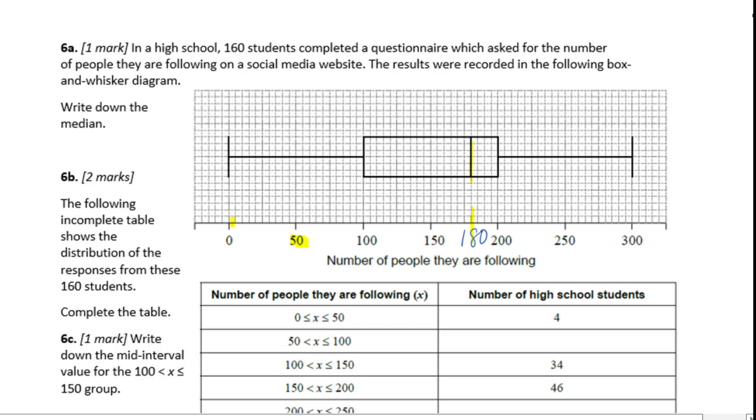So we know from 0 to 100, this is 25% of the data. This part is 25%, 25%, and 25%. From 0 to 100, we have 25% times 160, which means 40. 40 minus 4 will be 36.